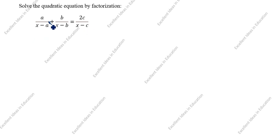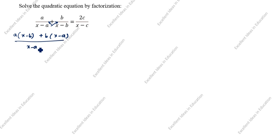We have to cross multiply this and this. A open the bracket x minus B, plus B open the bracket x minus A, divided by x minus A into x minus B, equal to 2C divided by x minus C.